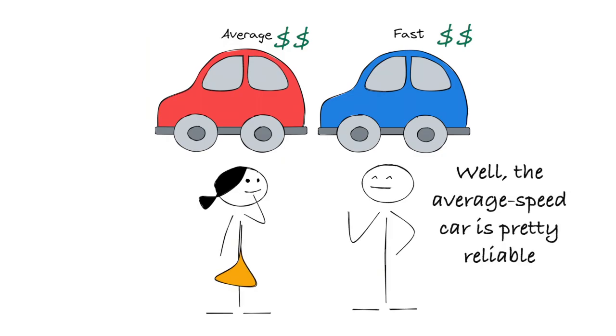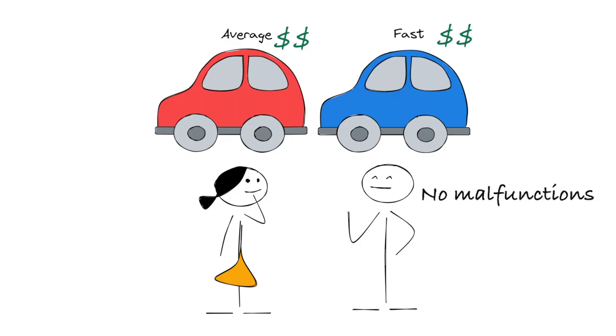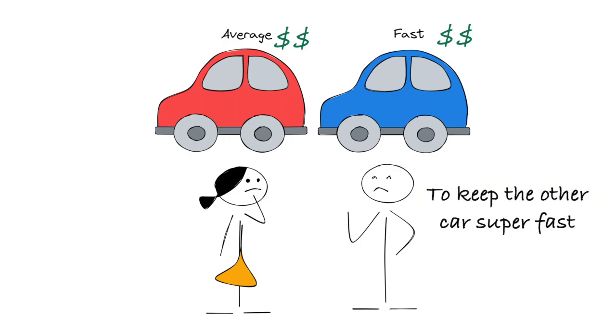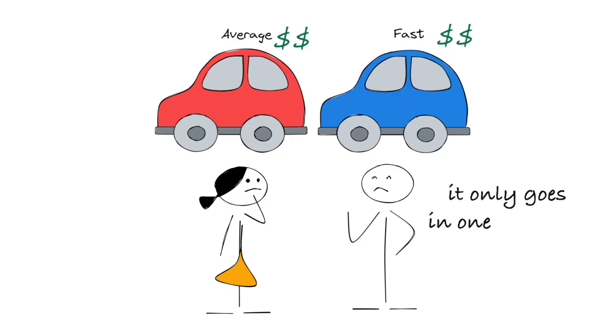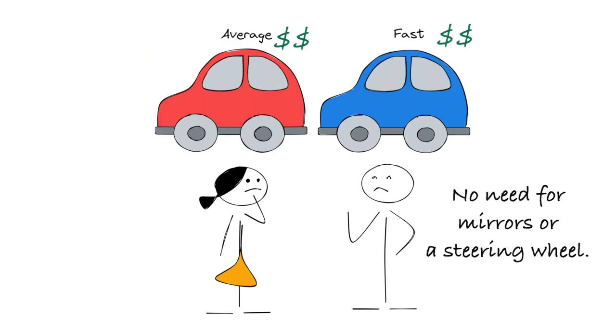Well, the average speed car is pretty reliable — no malfunctions. But to keep the other car super fast, it only goes in one direction. No need for mirrors or a steering wheel. So which car would you choose? Obviously not the flashy, malfunctioning one.